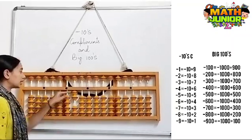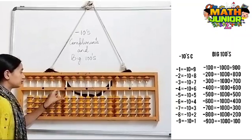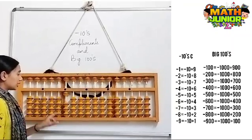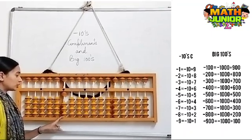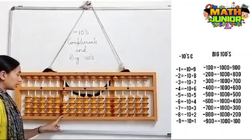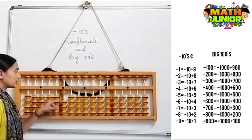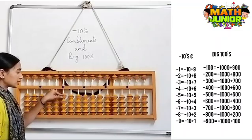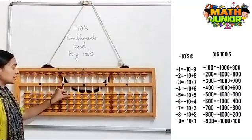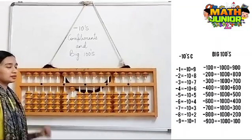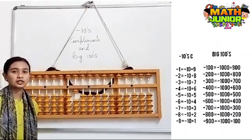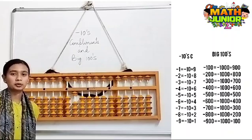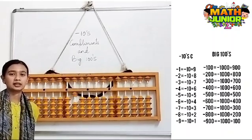Next, I have 1000 here and I need to remove 900. So the formula for minus 900 is minus 1000 plus 100. These are the formulas of minus 10's complement and its big 100's.